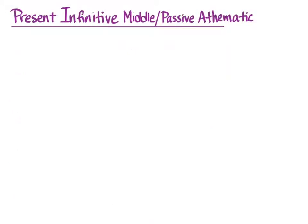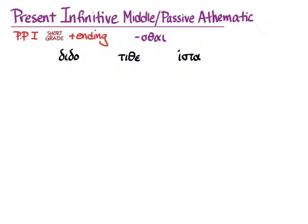Now for the present infinitive middle/passive for athematic verbs: first principal part, short-grade, plus the ending σθαι. That σθαι is the ending you'll recognize from earlier middle and passive infinitive endings, but this time there's no thematic vowel on the beginning of it. With the short-grade stems and recessive accent, we get διδόσθαι, τιθέσθαι, and ἱστάσθαι.